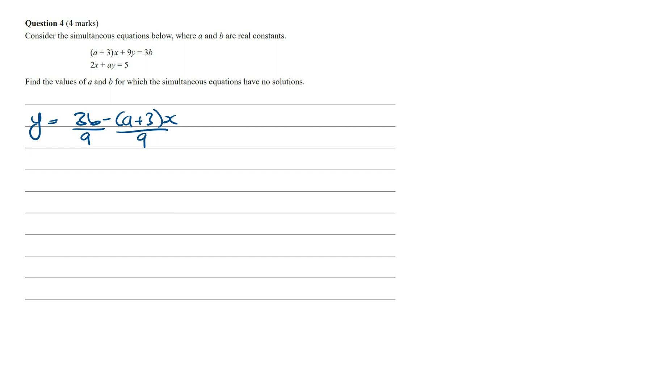For the second equation, this is going to be Y is equal to 5 minus 2X, and then we want to divide by A, and so again we want to write this in separate fractions. Now to have no solutions means that the two lines must be parallel, which means the gradient of the lines must be equal and the Y-intercepts must be different.